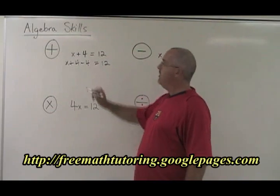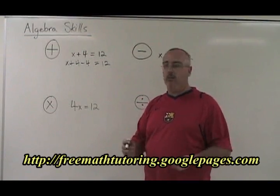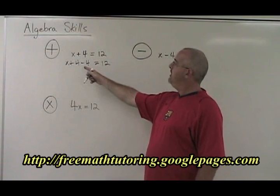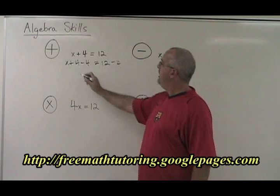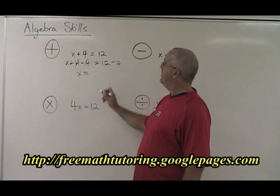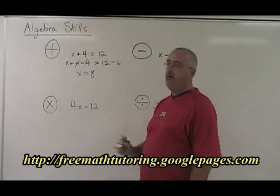You do the opposite. You subtract 4. If you add 4 and then subtract 4, they cancel out. The rule of algebra is if you subtract 4 on the left side, you have to subtract 4 on the right side. These cancel and you end up with x equals 12 minus 4, which is 8. You have your answer.